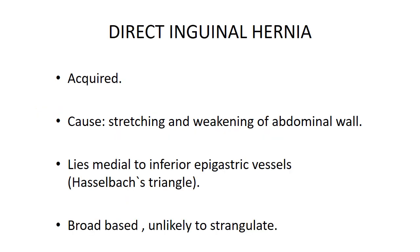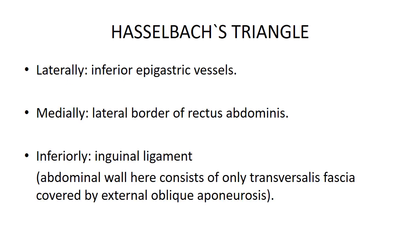Direct inguinal hernia is acquired, caused by stretching and weakening of the abdominal wall. It lies medial to the inferior epigastric vessels in Hesselbach's triangle. It is broad-based and unlikely to strangulate. Boundaries of Hesselbach's triangle: laterally — inferior epigastric vessels; medially — lateral border of rectus abdominis; inferiorly — inguinal ligament. The abdominal wall here consists of only transversalis fascia covered by external oblique aponeurosis.